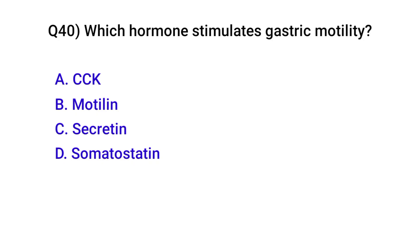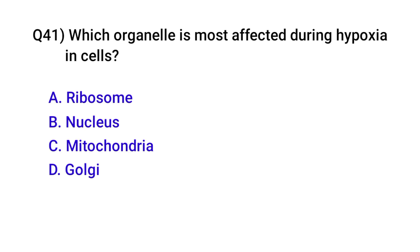Question number forty: Which hormone stimulates gastric motility? Correct option is B: Motilin. Question number forty-one: Which organelle is most affected during hypoxia in cells? Correct option is C: Mitochondria.